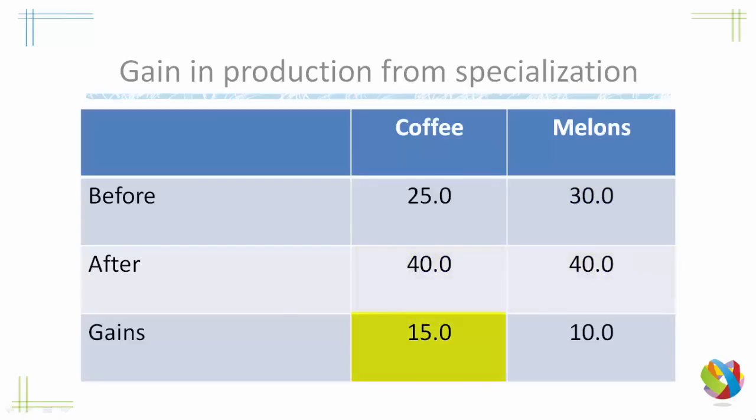We have a net gain of 15 coffees and 10 melons in the world, so the world is better off by 15 coffees and 10 melons. We can see that by specialising in the goods in which we have an absolute advantage, we can produce more and then trade them with other nations and get net gains for everyone. In the next video we'll move on to a more sophisticated argument — that of comparative advantage, brought up by David Ricardo.